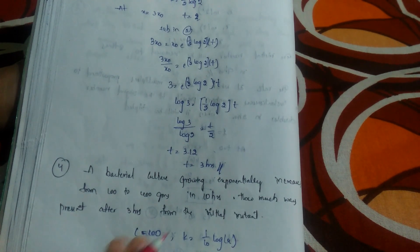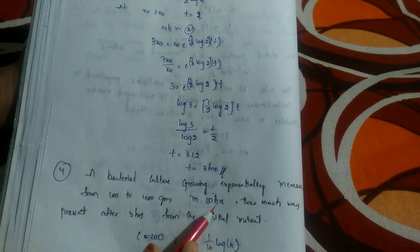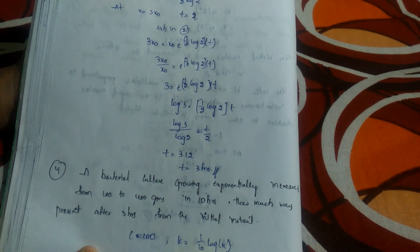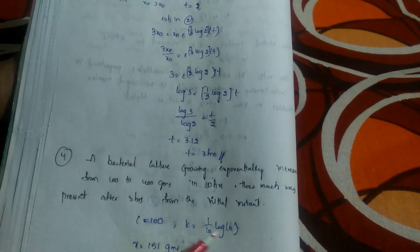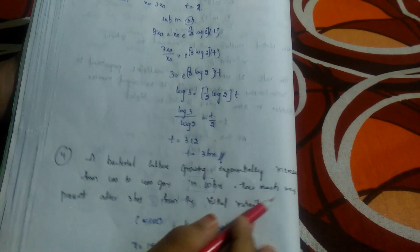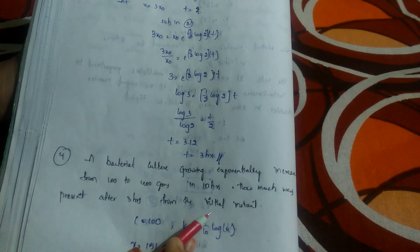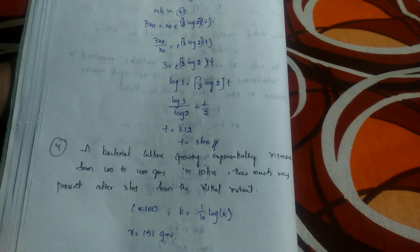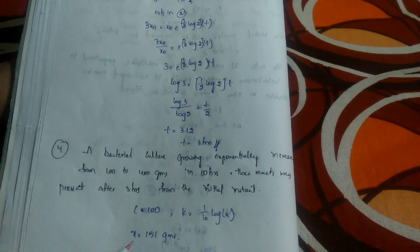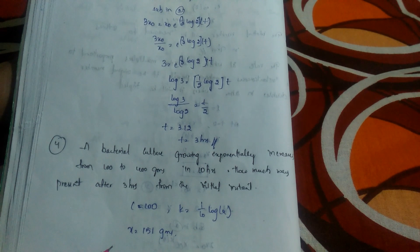One more question: a bacterial culture growing exponentially increases from 100 to 400 grams in 10 hours. How much was present after 3 hours from the initial instant? C value will be 100 and k = (1/10)·log 4. At t=3 hours, you will get approximately 151 grams. Try to solve this on your own — if you have any doubts, let me know in the comment section. These problems are very similar to Newton's law of cooling problems.